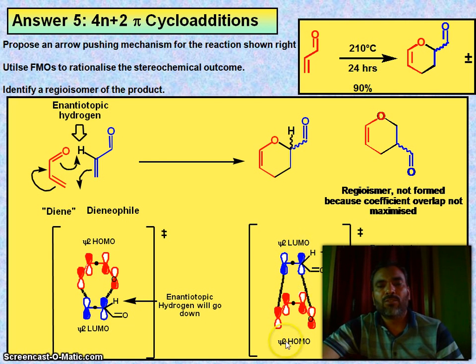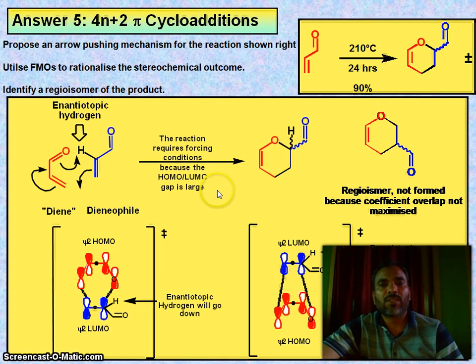HOMO to LUMO. An enantiomer of hydrogen will be HOMO to LUMO, hydrogen will go up. So the reaction requires forcing conditions because HOMO-LUMO gap is large.